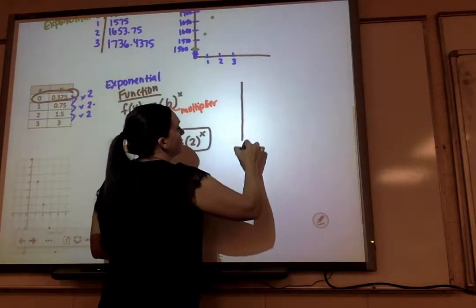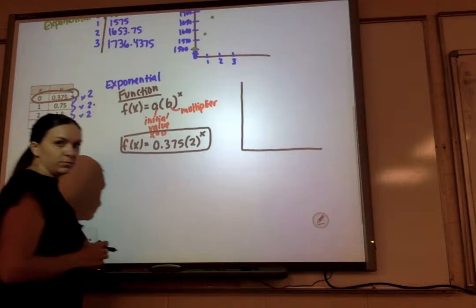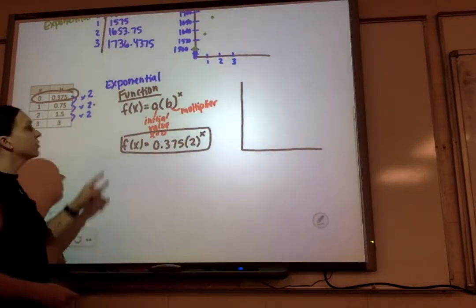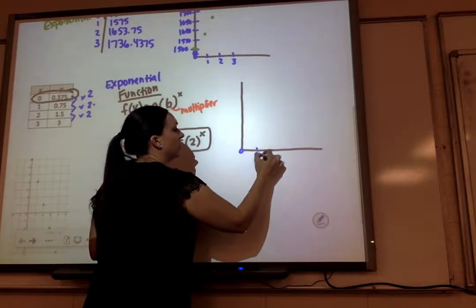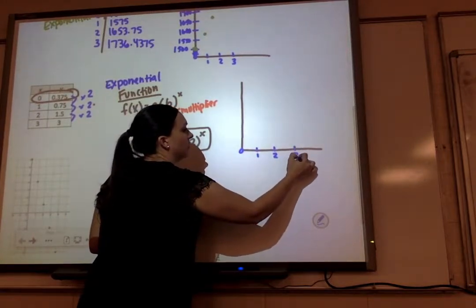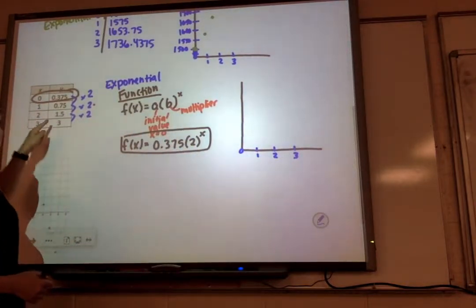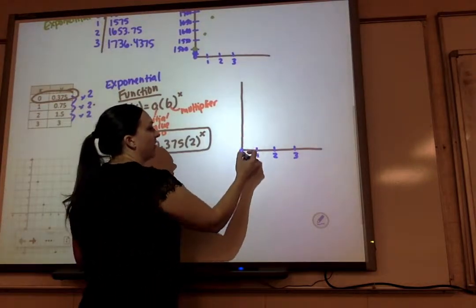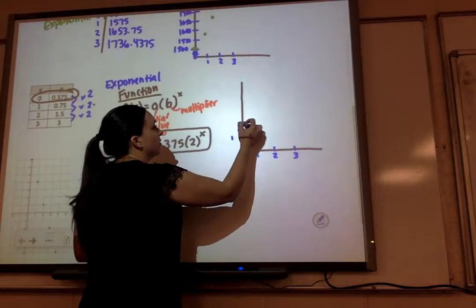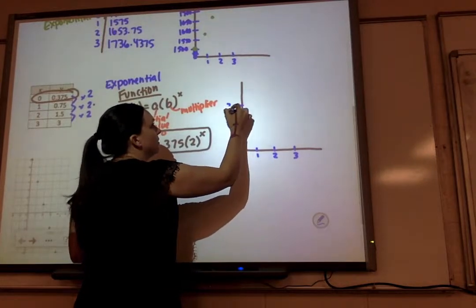Now we need to graph it. So my x values are going from 0 to 3, and my y values only need to go to 3 as well, it's my highest y value.